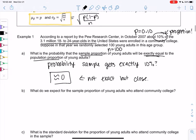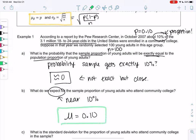What do we expect for the sample proportion of young adults who attend community college? We expect, like what do we expect to happen on average? We expect it to be near 10 percent, not exactly, but near. And so that's why the average is equal to the proportion. So on average we should get 10 percent or 0.10. Individual samples will vary, but on average we should get 10 percent.